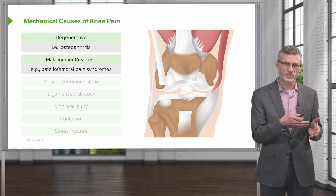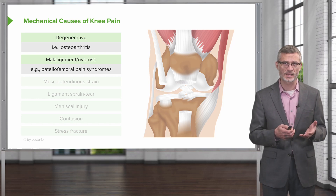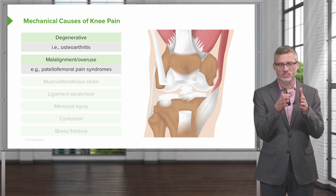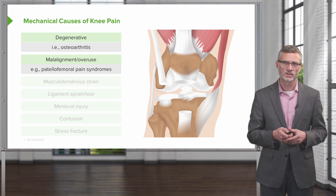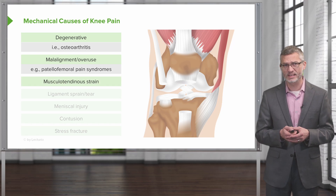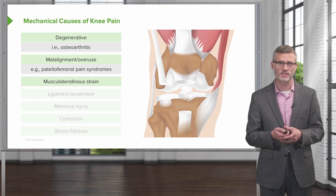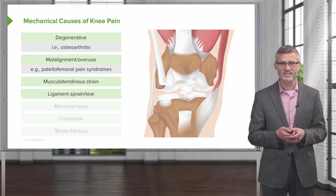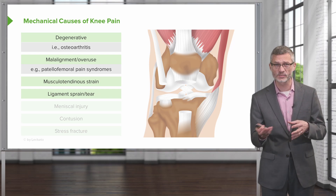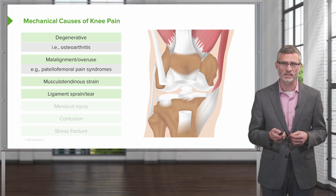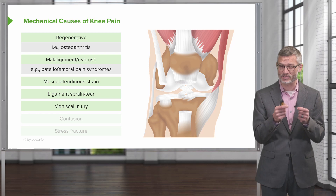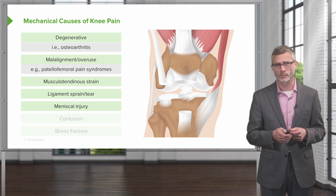In younger women in particular, we can have malalignment issues such as patellofemoral pain syndrome, where the different forces acting on the patella have caused it to be laterally displaced, and that can cause problems with ambulation and even with prolonged sitting. Musculotendinous strains, like quadriceps tendinitis or patellar tendinopathy. Ligament sprains and tears — we'll want to come up with some good tests to rule out an MCL tear or an ACL tear versus just a strain of those ligaments. Meniscal injuries are relatively common, and they're inside the knee, so we have to come up with some good tests to really identify what's going on with them.